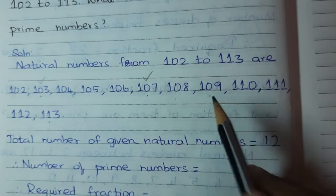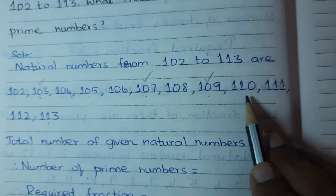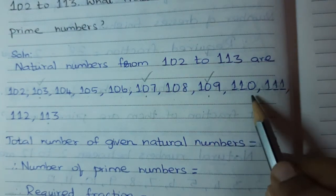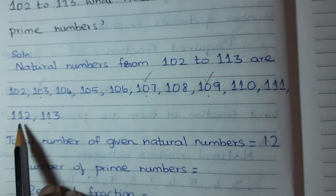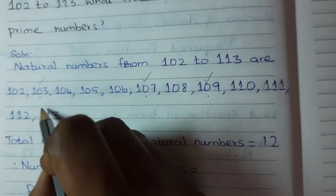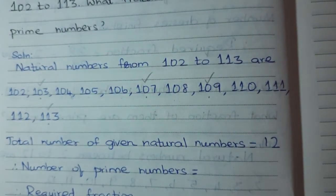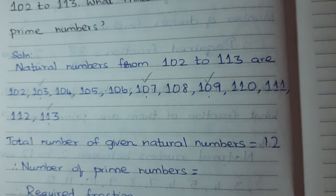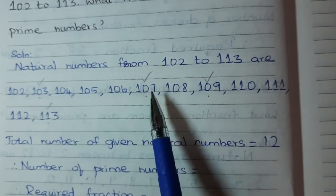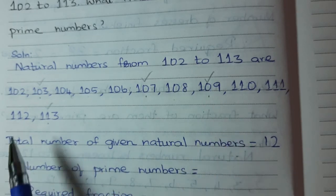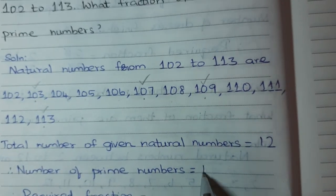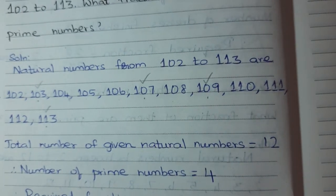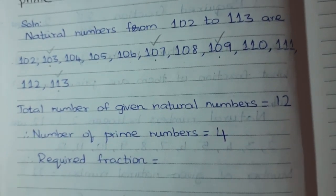109 is a prime number. 110 is not a prime number. 111 is not a prime number. 112 is not a prime number and 113. So now I have to check how many prime numbers are there. 1, 2, 3, 4. So out of 12, I have only 4 as prime numbers.